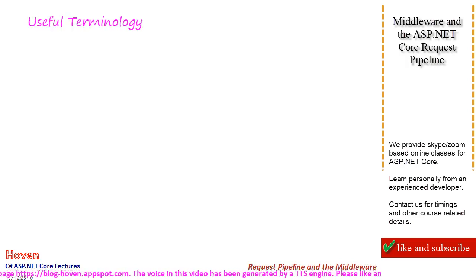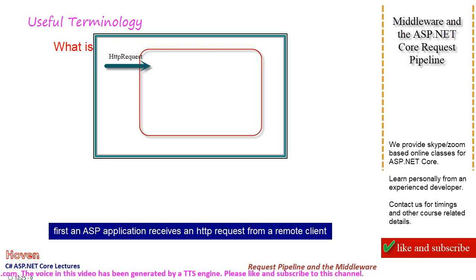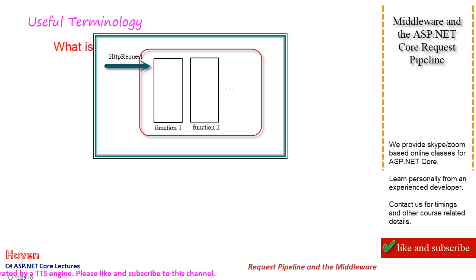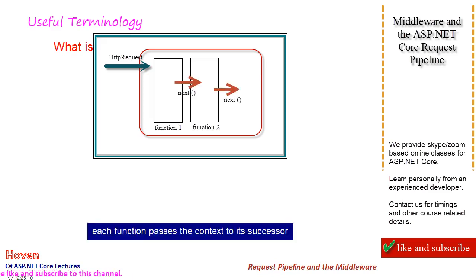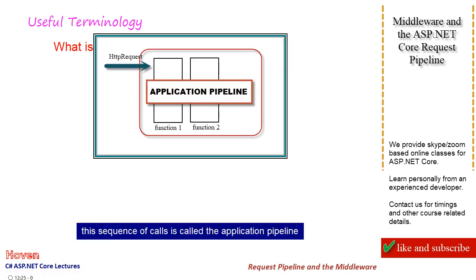Let me first explain a few common terms. What is an application pipeline? First, an ASP application receives an HTTP request from a remote client. Then this request is processed through a chain of function delegates. Each function passes the context to its successor. Finally, a response is sent back to the caller. This sequence of calls is called the application pipeline.